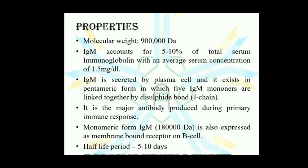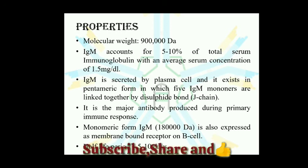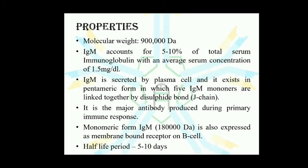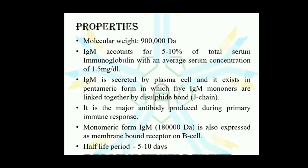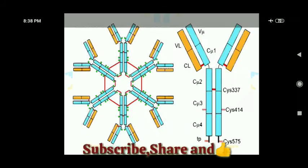In the pentameric form, five monomers of IgM are linked through the J-chain. The molecular weight of the J-chain is 15,000 dalton. IgM is the major antibody produced during the primary immune response. The monomeric form of IgM has a molecular weight of 180,000 dalton. It is also expressed as a membrane-bound receptor on B cells in monomeric form. The half-life of IgM antibodies is approximately 5 to 10 days.